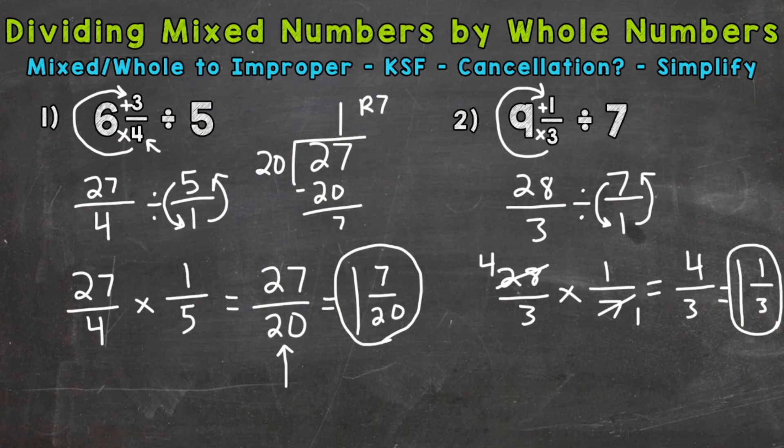I do want to show you a comparison here. Let's solve this without using cancellation and see what that looks like. So I'll rewrite our problem. We had 28 over 3 times 1 7th. So let's multiply straight across. 28 times 1 is 28. 3 times 7 is 21. So we end up with 28 over 21. So it looks a little different here. But we do need to simplify.